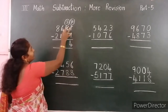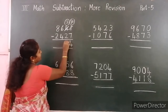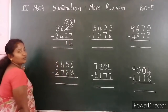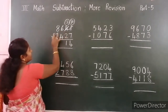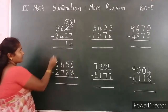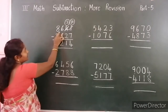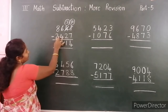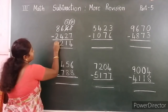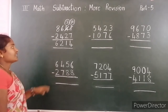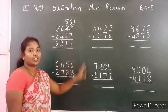Now tens place: 3 minus 2 — the difference is 1. Next, hundreds place: 6 minus 4 is 2. Next, thousands place: 8 minus 2 is 6. The answer is 6,214.